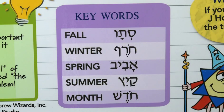Here are the key words that I think are important for the seasons. We have fall, which is stav. We have winter, which is choref. Spring is aviv — like Tel Aviv, which is hill of spring. We have summer, which is kaits. And we have month, which is chodesh. And a new month, which would be chodesh chadash — a new month.